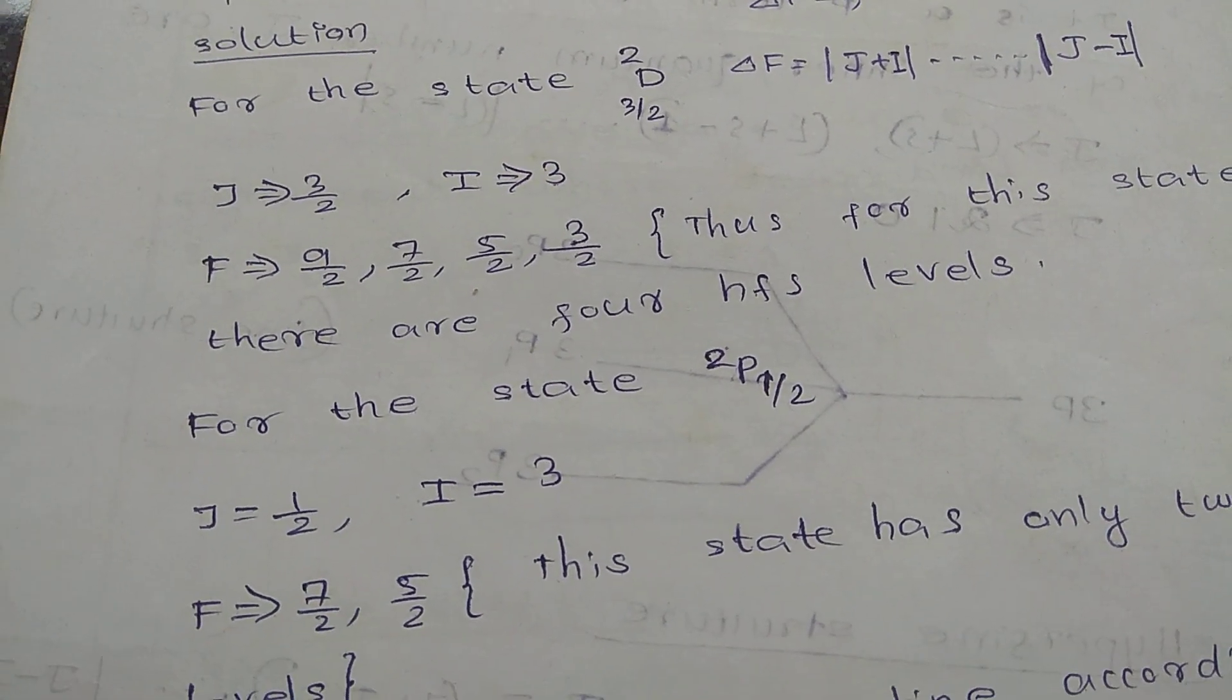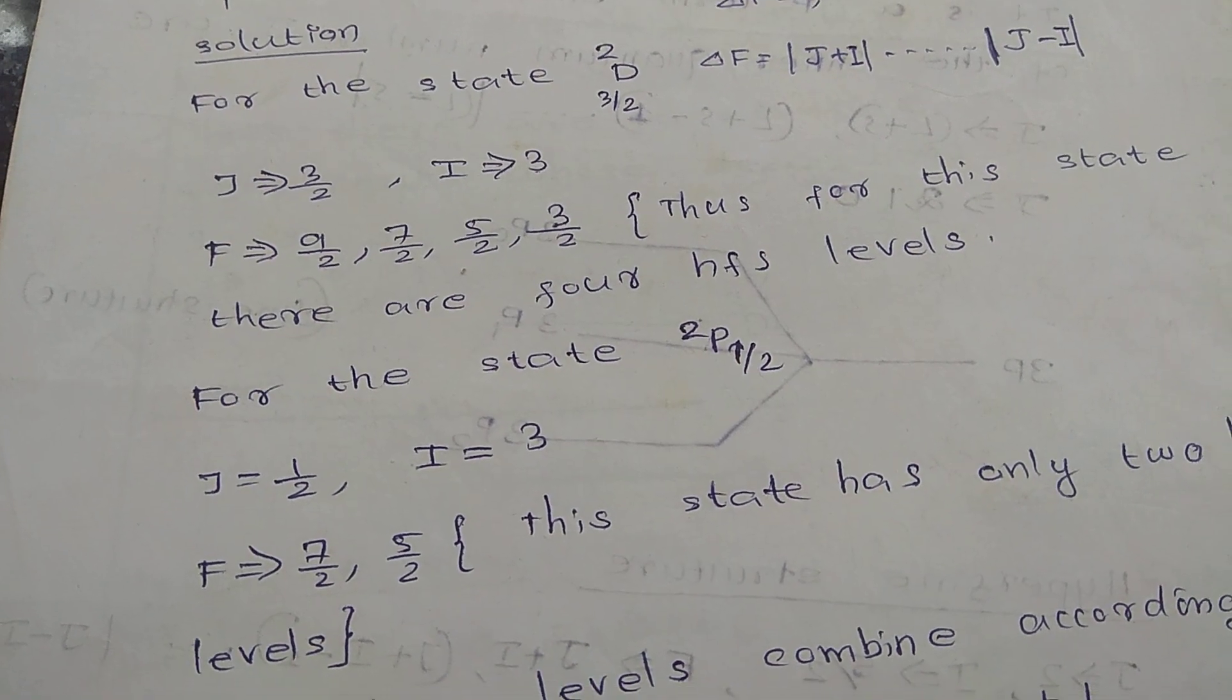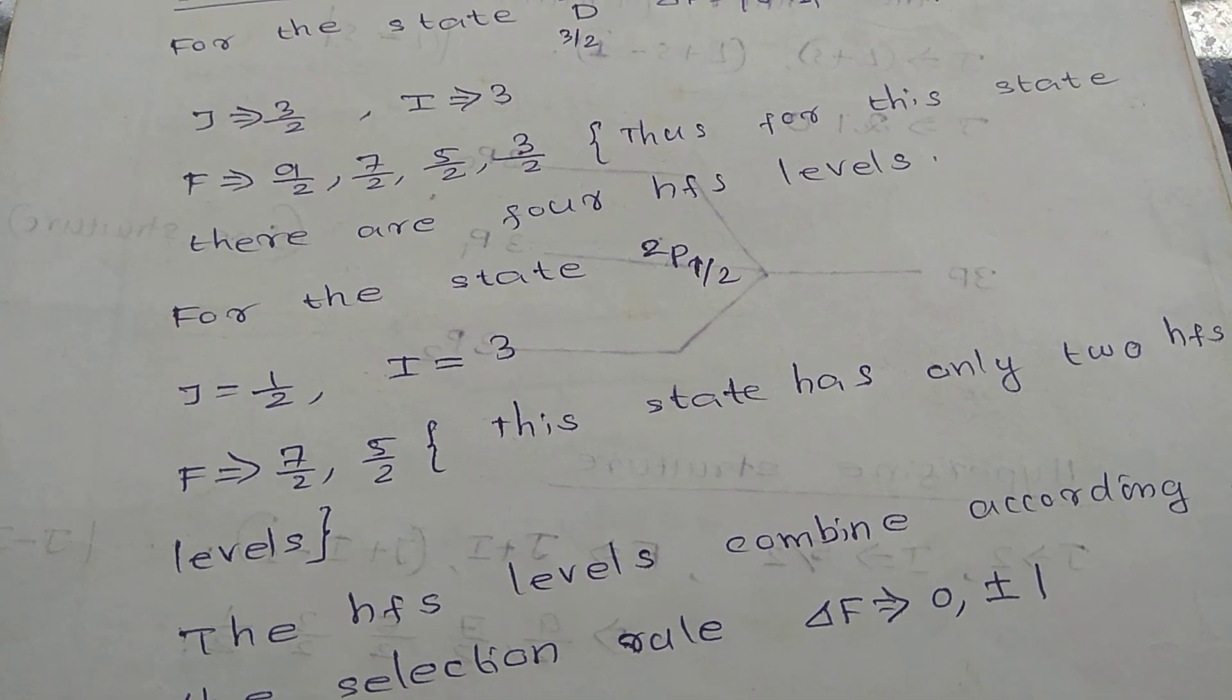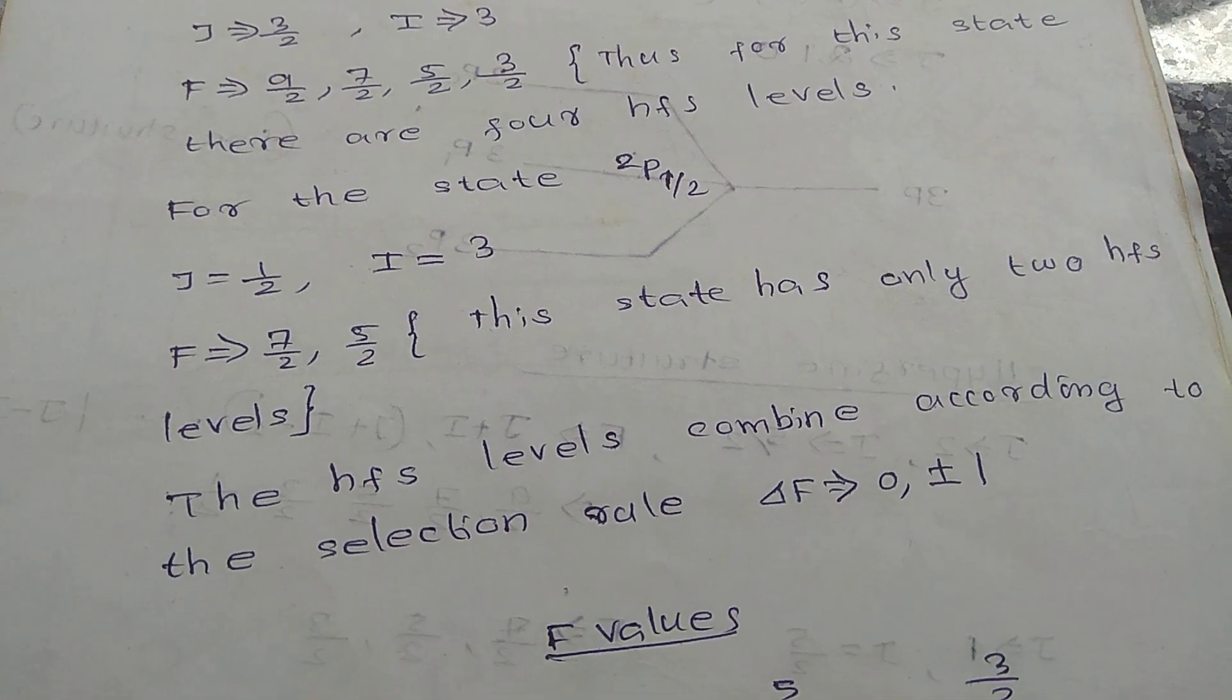Similarly for the state P₂¹/₂, J equals 1/2, I equals 3. So F equals 7/2, 5/2 using the hyperfine selection rule. This state has only 2 hyperfine levels.